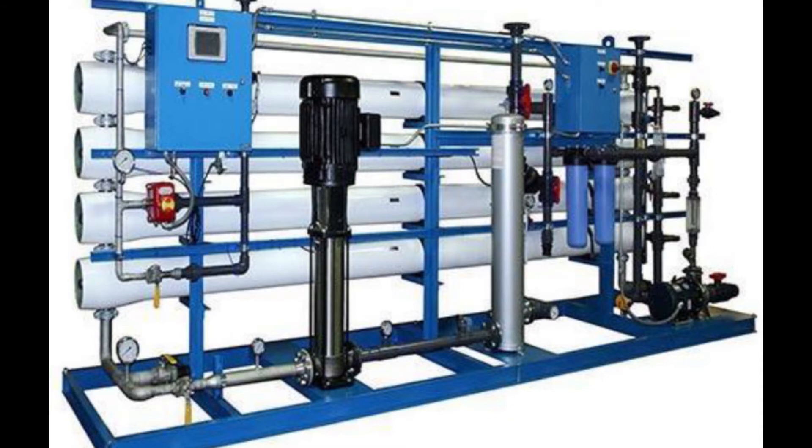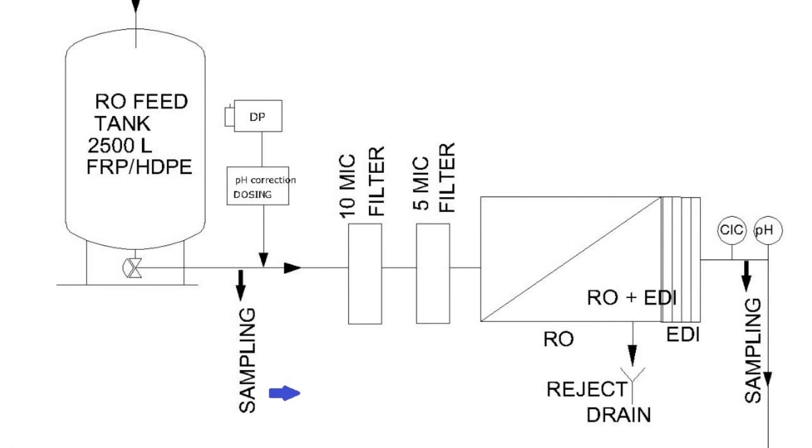Within the membrane system, the feed water will be split into pure water called the permeate and a high concentration of solute water called the reject. RO is capable of removing dissolved salts, particles, colloids, organics, bacteria, and pyrogens from the water. The membranes do not remove any gases.